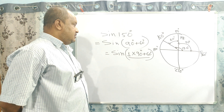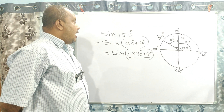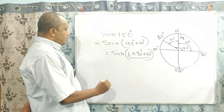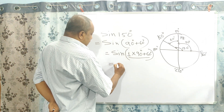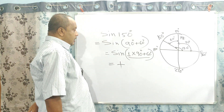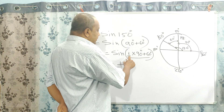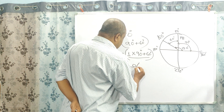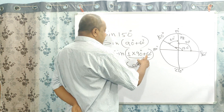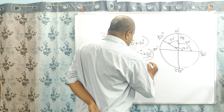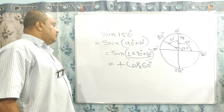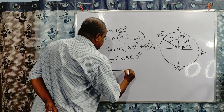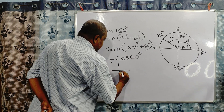In the second quadrant the value of sine and cosec are positive. So a positive sign will come. Since 1 is an odd number, sine is converted to cos and the angle is 60 degrees. So sin(150°) = cos(60°) = 1/2.